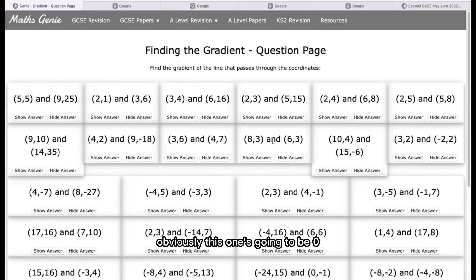Then you can hide an answer to this question. Obviously this one's going to be zero since both of them are on the y-coordinates on three, so they're both at the same place on the y-axis. So it means that there's not going to be a gradient.